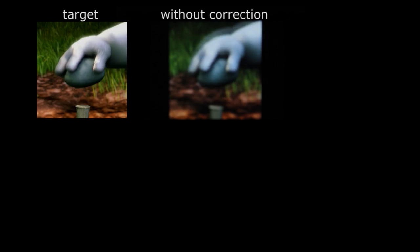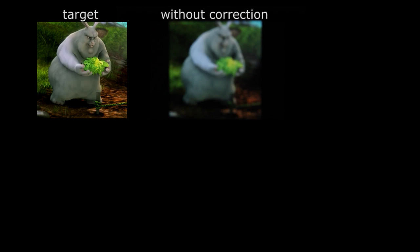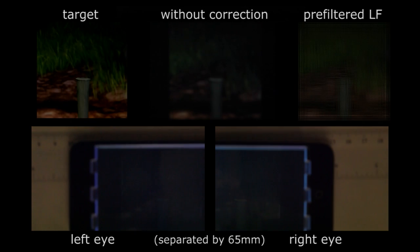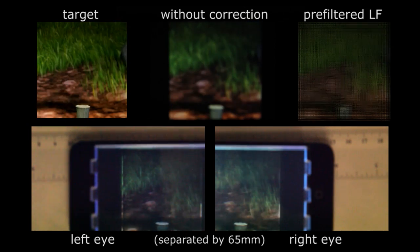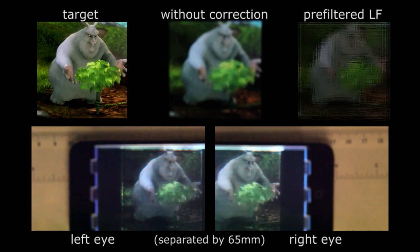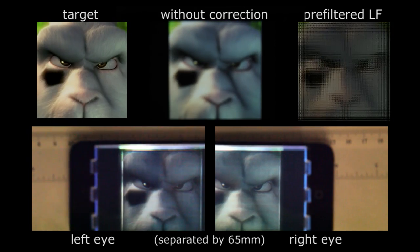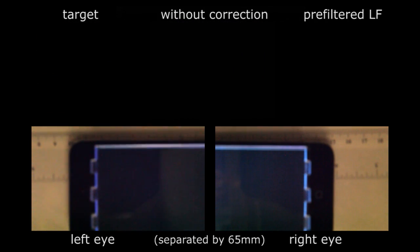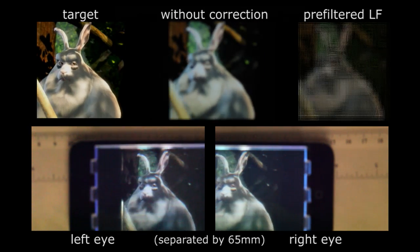We see the target video and the captured video without correction on a conventional display. With the pre-filtered light field video on top right, the captured images are much sharper, as shown on the bottom, and the optimization allows two eyes separated by a 65mm distance.